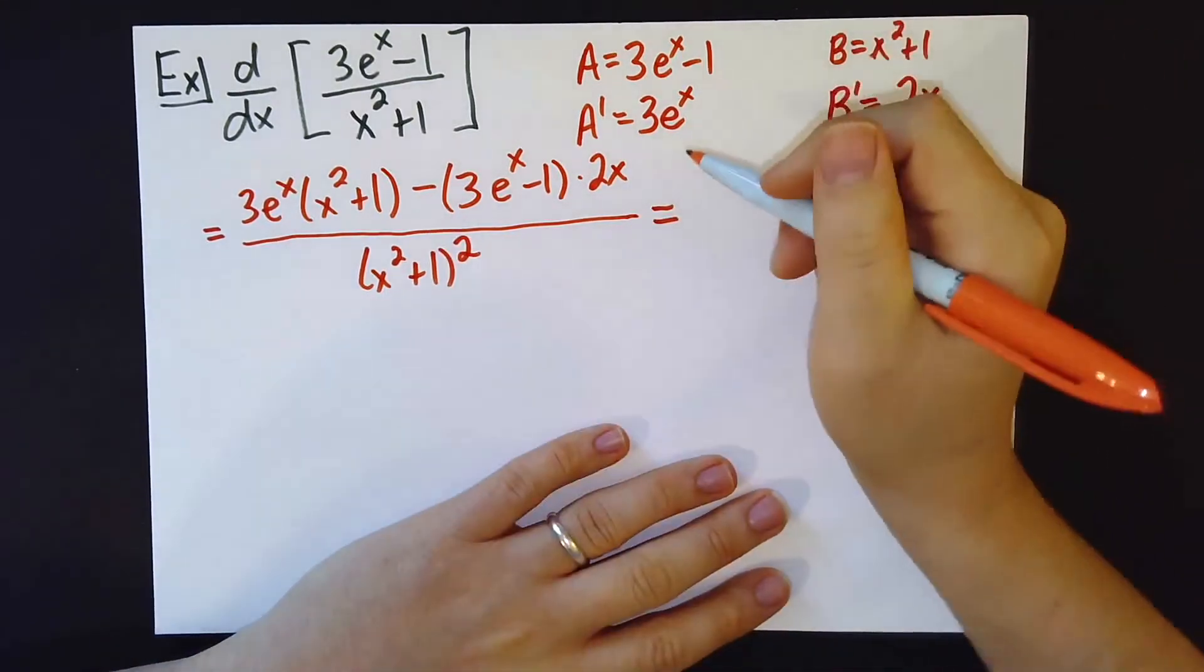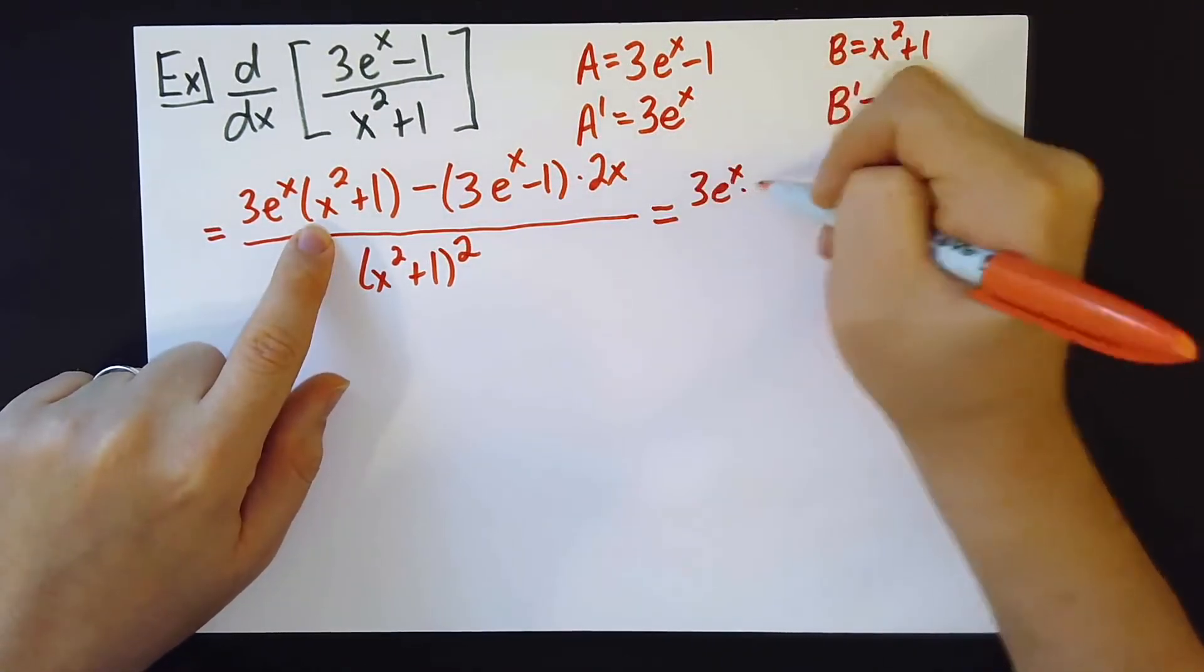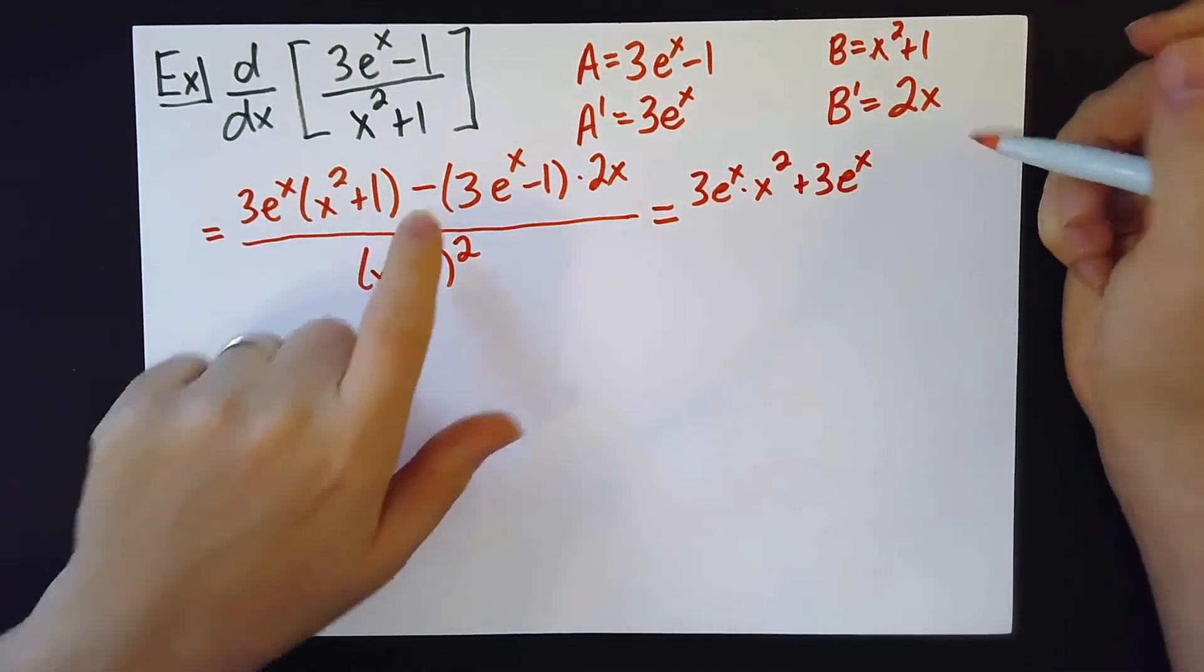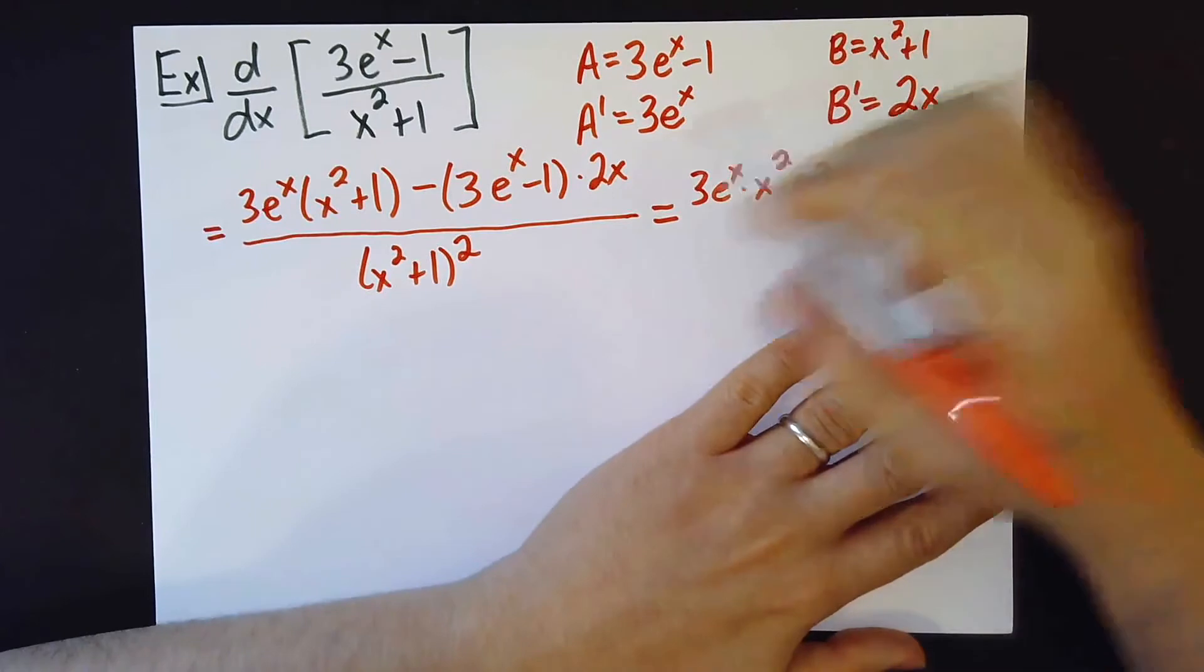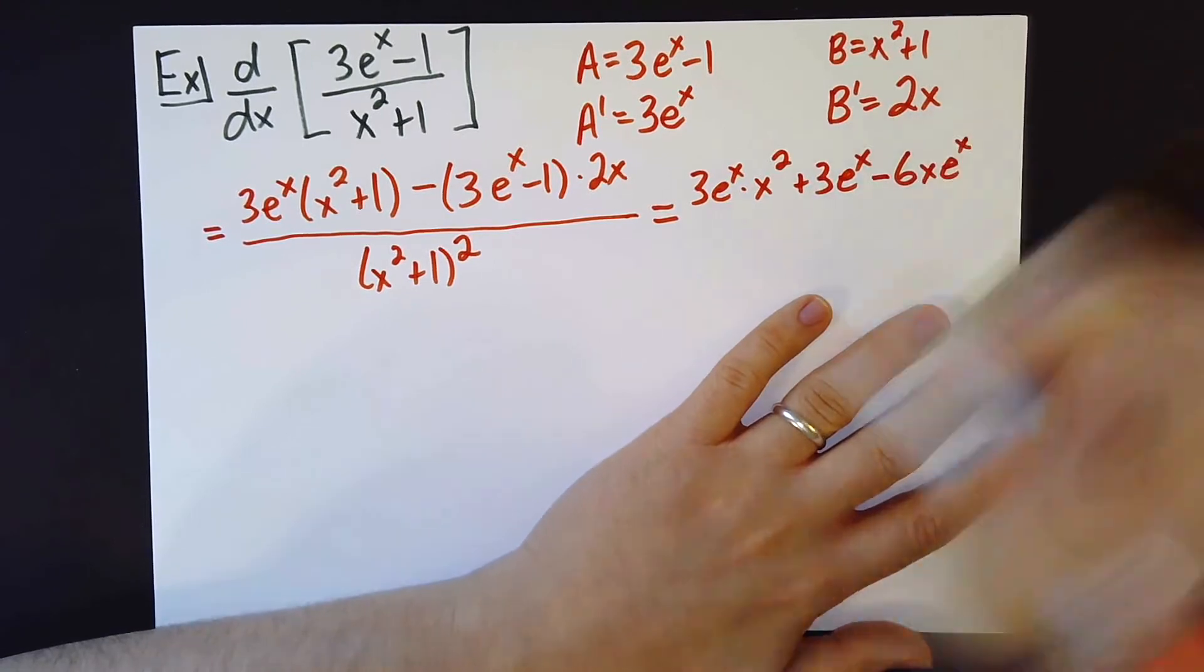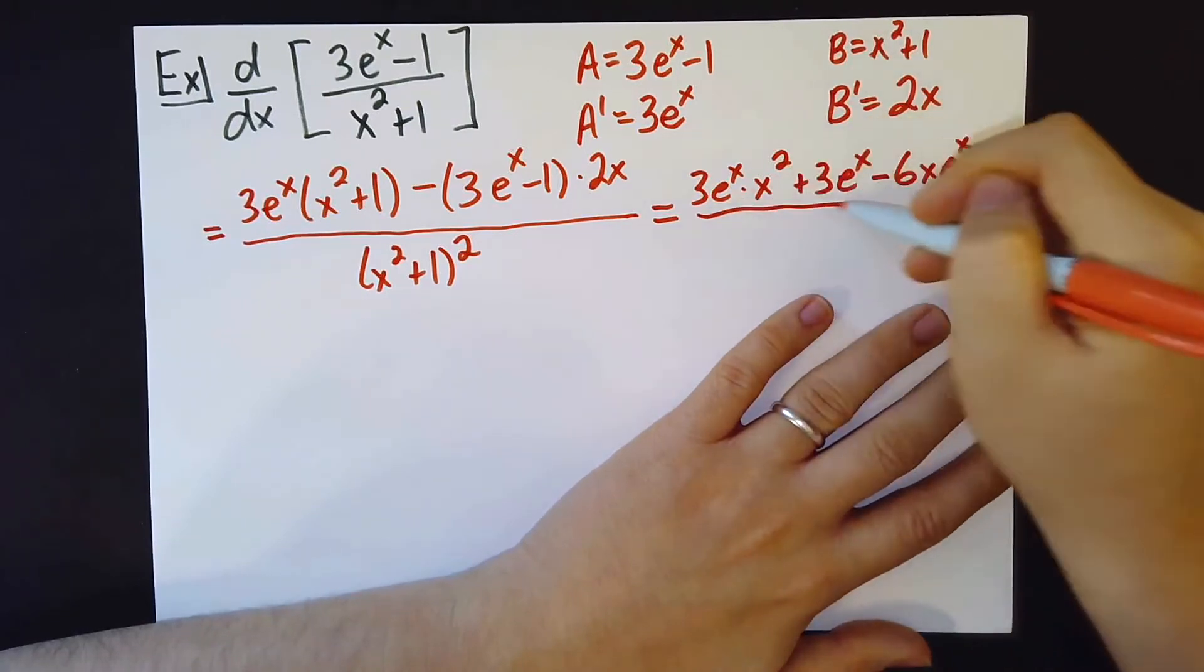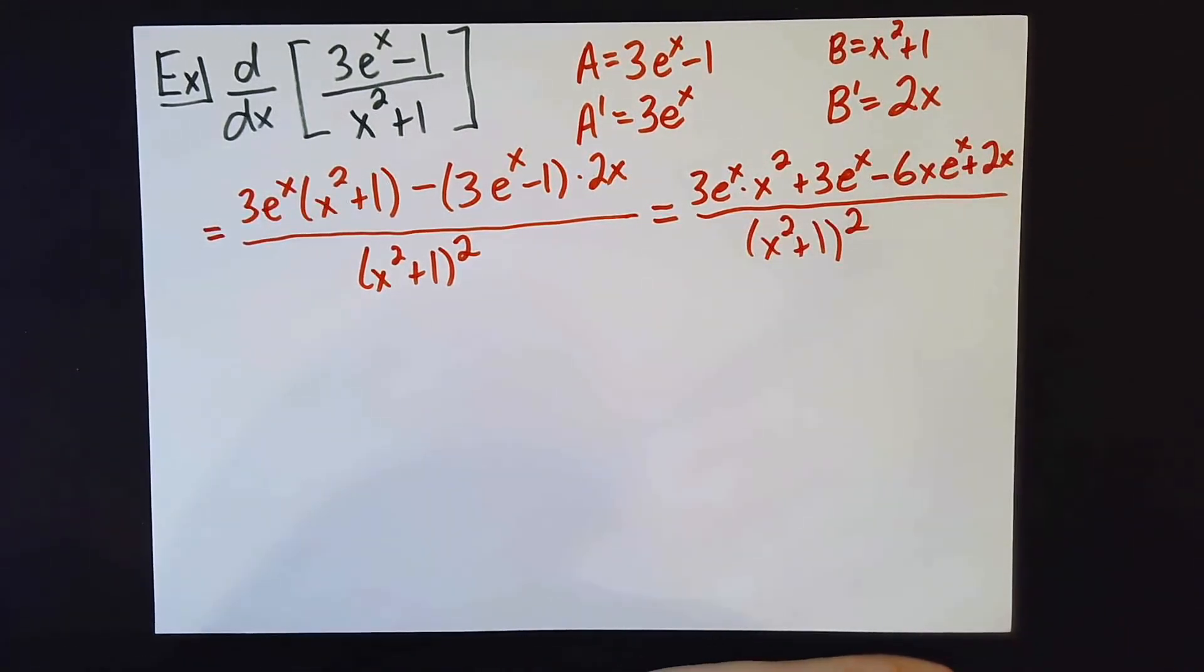All right, and so now we can simplify this as much as we can. So I will get a 3e to the x times x squared plus a 3e to the x minus a 3e to the x times 2x. So that would be minus 6x e to the x, and then minus a minus 2x, so plus a 2x. All divided by x squared plus 1 squared. And we were not so fortunate there as to have anything cancel, so we can just leave our answer in this form.